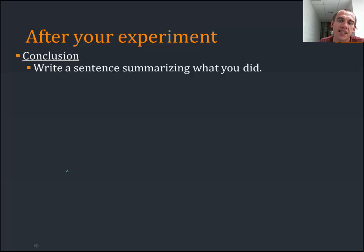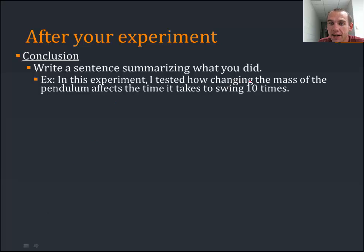We want a sentence summarizing what you did. So, in this lab we measured how mass affected swing time. In this experiment I tested how changing the mass of a pendulum affects how long it takes to swing 10 times. That tells me concisely and briefly this is what I did.